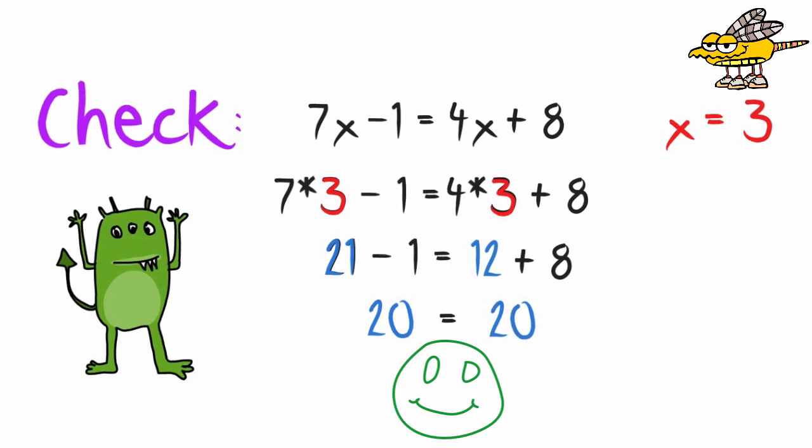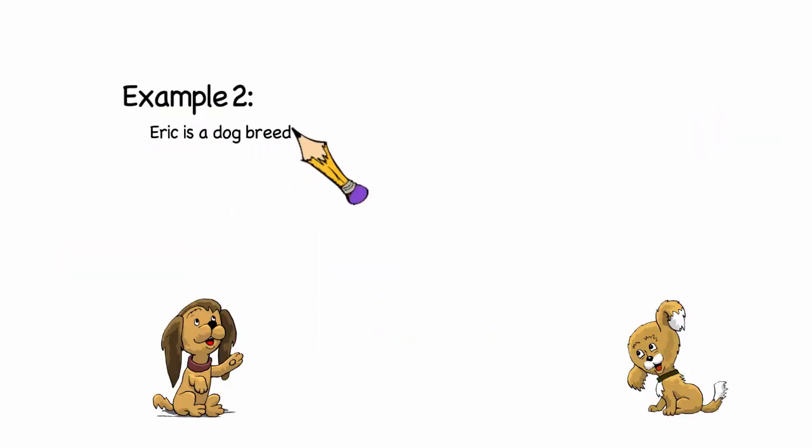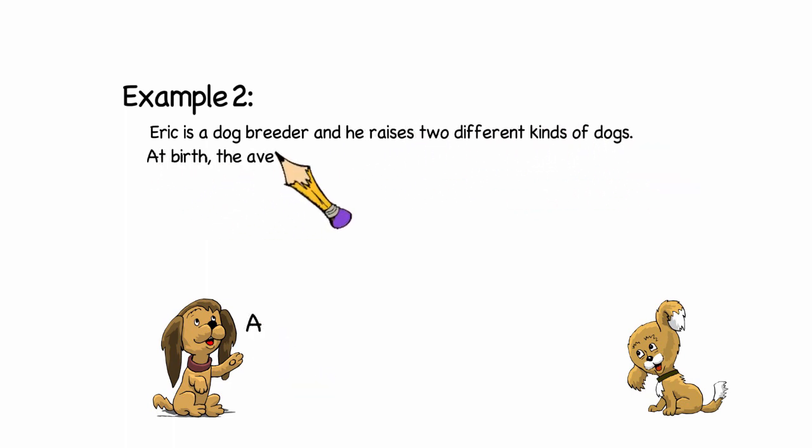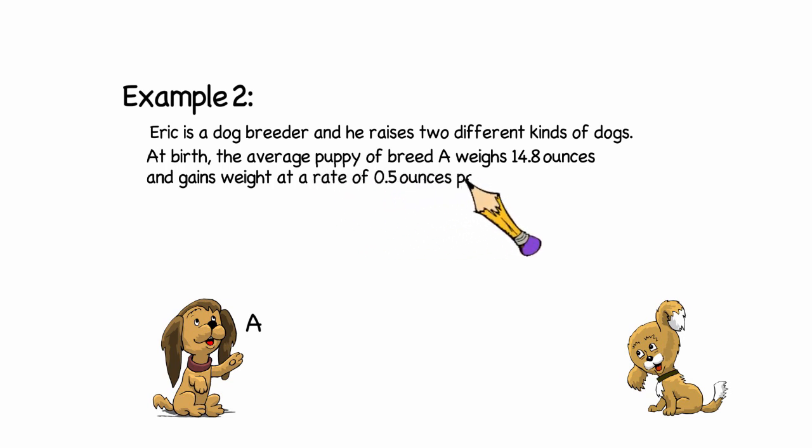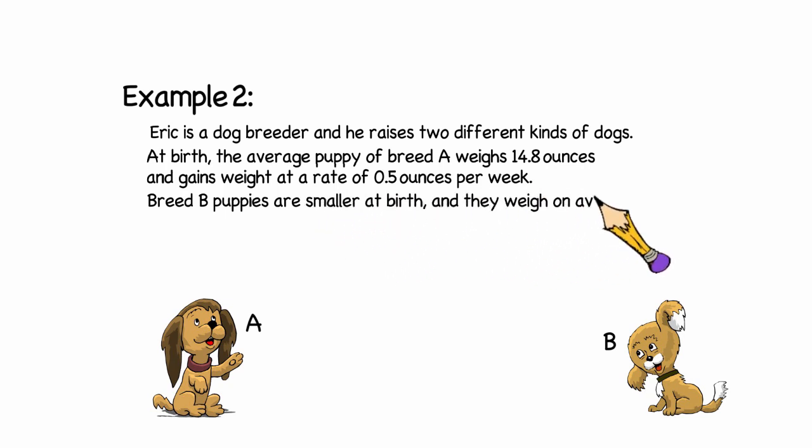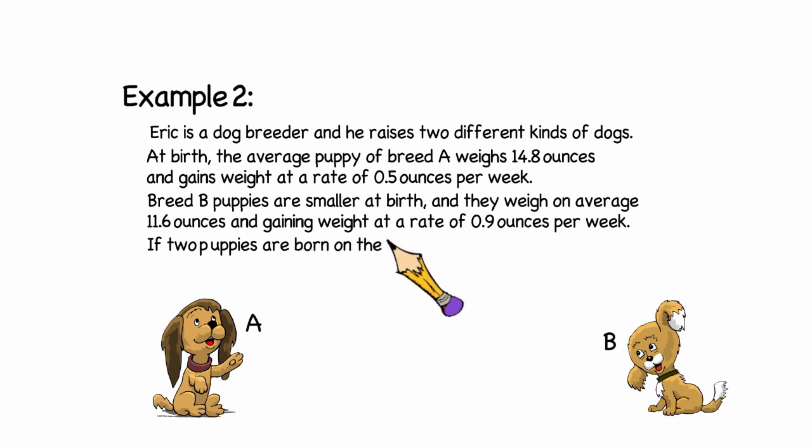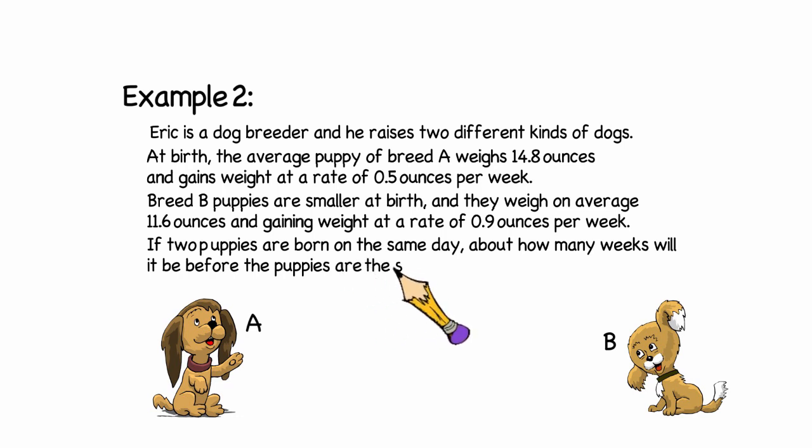Let's look at another example. Eric is a dog breeder. And he raises two different types of dogs. At birth, an average puppy of breed A weighs 14.8 ounces and gains at a rate of 0.5 ounces per week. Breed B is a little bit smaller. And his puppies weigh on average 11.6 ounces. And they gain about 0.9 ounces per week. If we had two puppies born on the same day, about how many weeks would it be before the two puppies weigh the same amount?